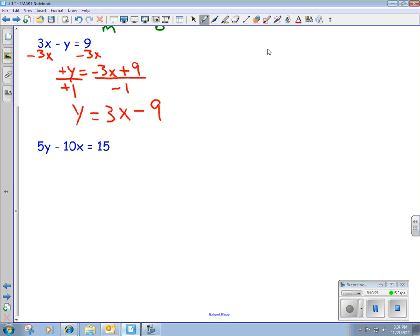Okay. So 5y minus 10x equals 15. So we want y by itself. So to do that, here's our y is on our left-hand side. So we're going to add 10x to both sides. So that we have 5y equals 10x plus 15. So that gets rid of our negative 10x and our positive 10x.